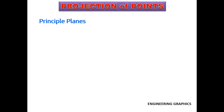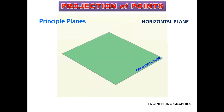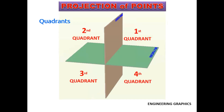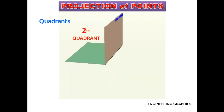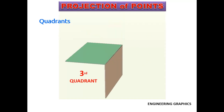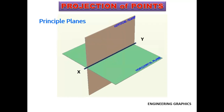There are two principal planes: a vertical plane, which is represented as VP, and a horizontal plane, which is represented as HP. When these planes intersect each other, four quadrants are formed — first quadrant, second quadrant, third quadrant, and fourth quadrant. The intersection line between the HP and VP is called the XY line.